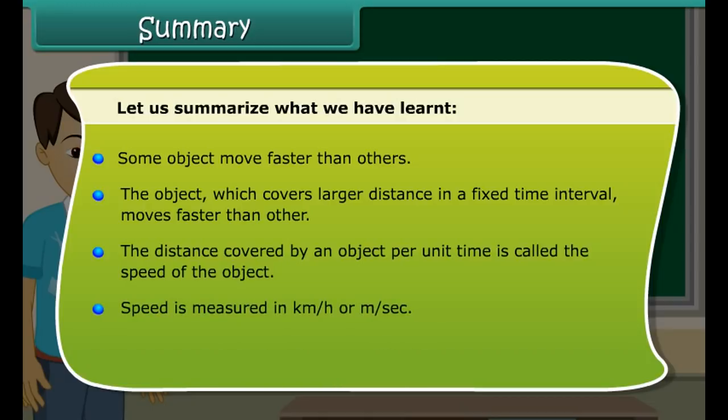Let us summarize what we have learned. Some objects move faster than others. The object which covers a larger distance in a fixed time interval moves faster. The distance covered by an object per unit time is called the speed of the object. Speed is measured in kilometers per hour or meters per second. A speedometer measures the speed of a vehicle and an odometer shows the distance covered by it.